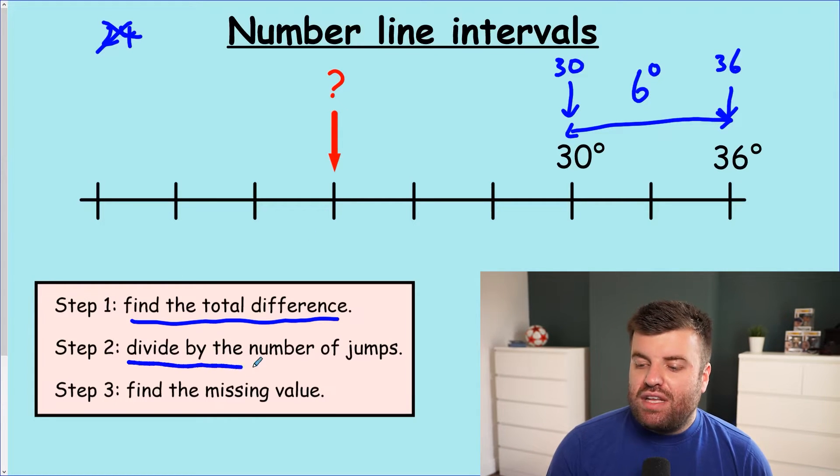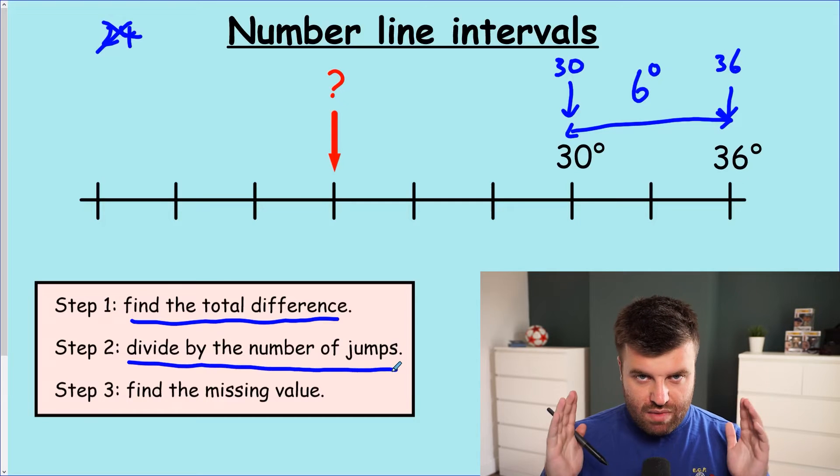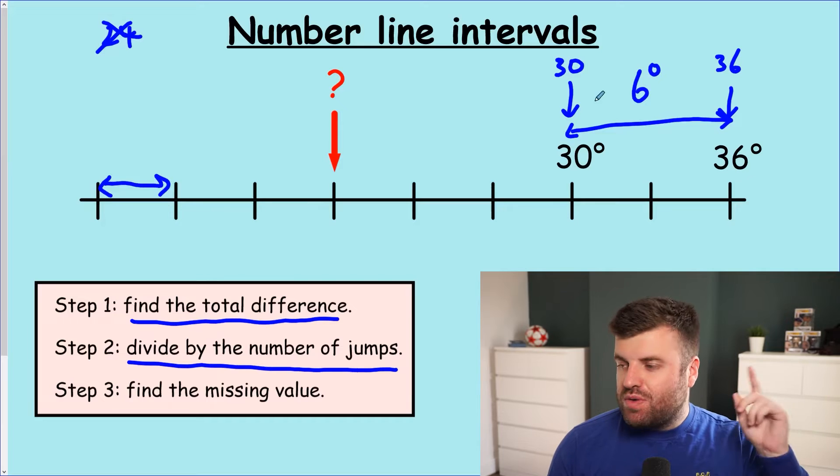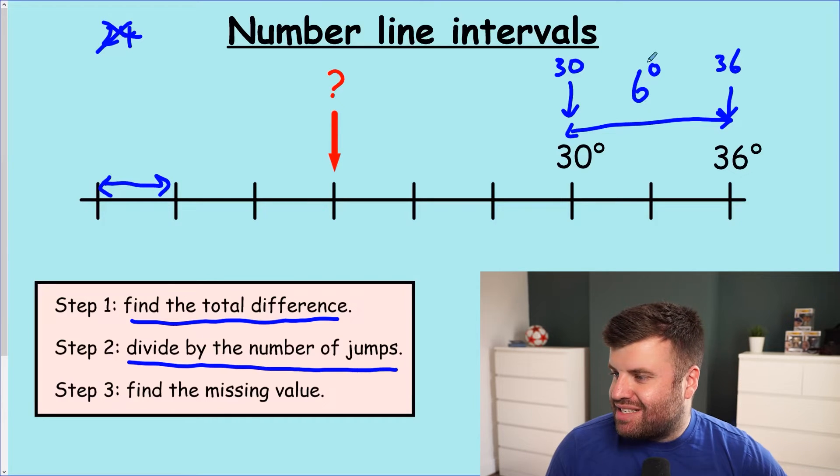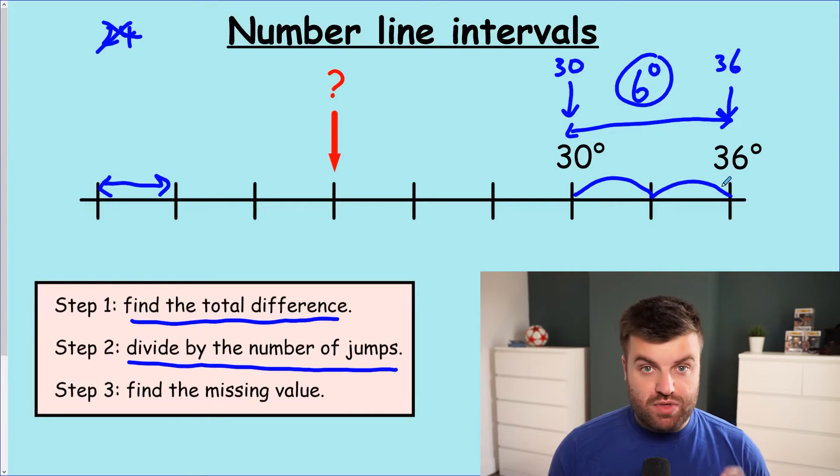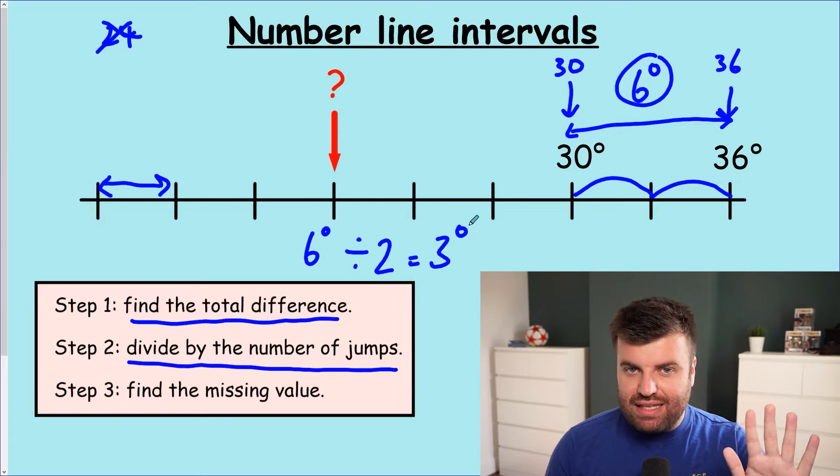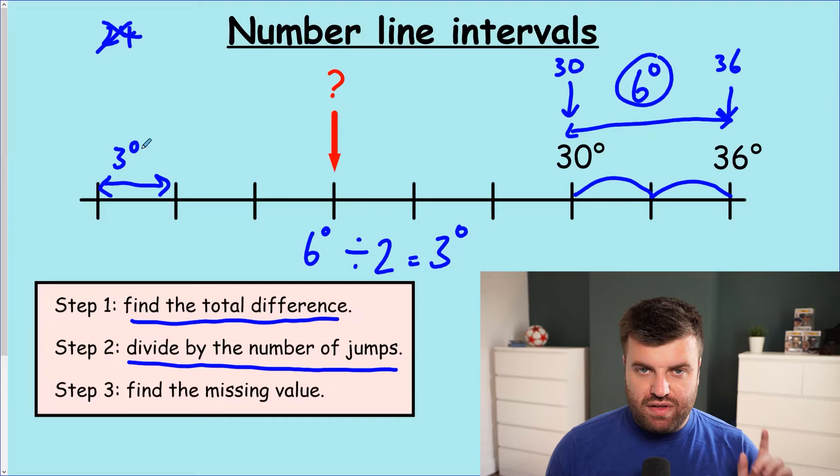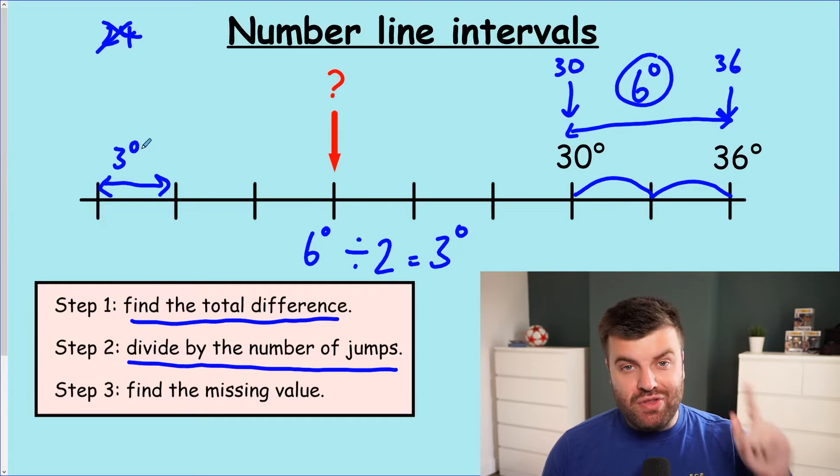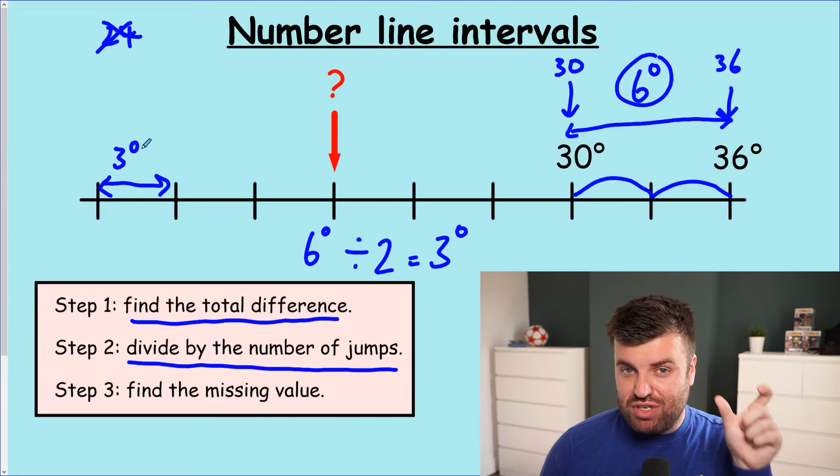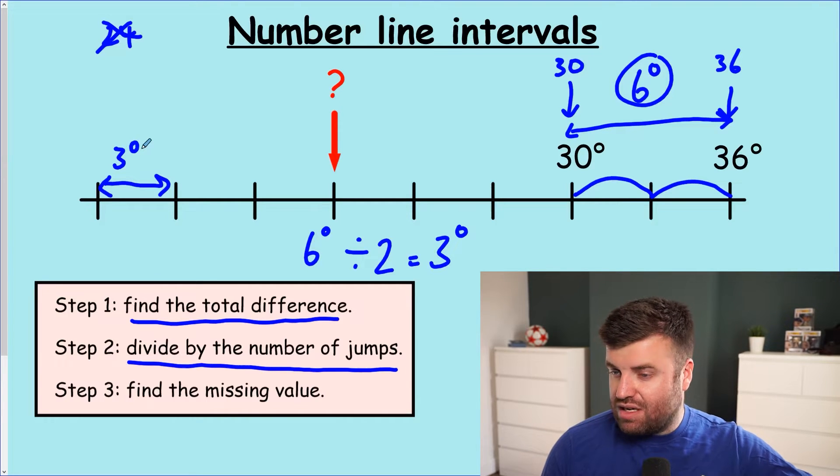Let's take a look at step two. Divide by the number of jumps. Our aim here essentially is to try and figure out what is one of these gaps worth. That's what we need to know. So we're going to find the total between here, which is six degrees, and then we count how many jumps there are. So that's one, two jumps on our number line. So we have to divide by that. Six degrees divided by two is three degrees. So we've calculated now that every single jump here is worth three degrees. Have we finished the question? No, but what we have done, and this is the most important part, is developed a strategy to find out how much each jump is worth.